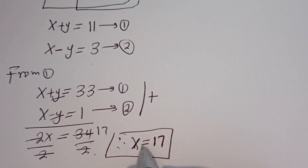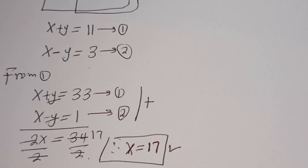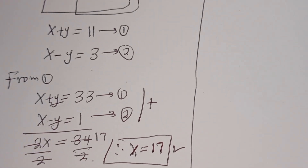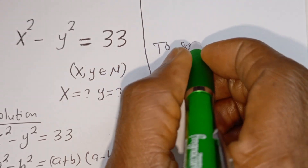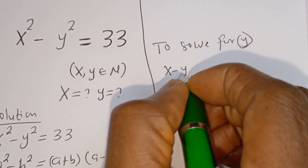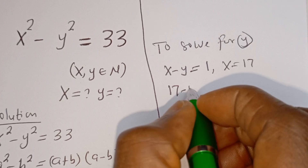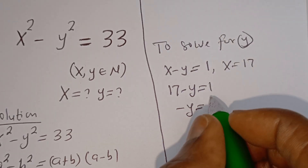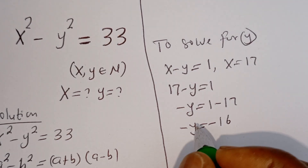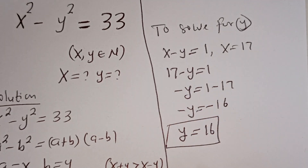Since X equals 17 is a natural number, this is accepted. Now let's solve for Y using equation 2: X minus Y equals 1. When X equals 17, we have 17 minus Y equals 1, so minus Y equals 1 minus 17, which gives minus Y equals negative 16. Therefore Y equals 16.